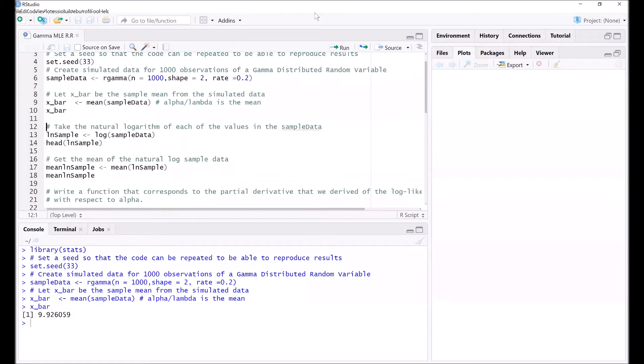It's important to note that if x followed the gamma distribution, the shape parameter of 2 and the rate parameter of 0.2, then the expected value of x would have been equal to 2 over 0.2, so alpha over lambda, which equals 10. Since we're sampling from the distribution, we're going to be a bit different from that value of 10. Our mean is 9.926, but that's close enough for the purpose of sampling and making inference.